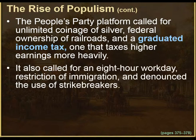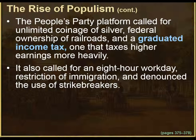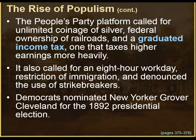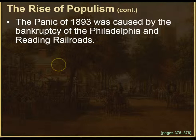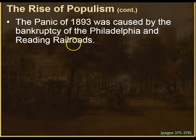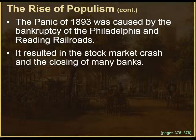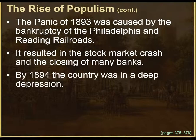The platform also called for an eight-hour workday, restriction of immigration, and denounced the use of strike breakers. Democrats nominated New Yorker Grover Cleveland for the 1892 presidential election, and Cleveland won. In 1893, a panic was caused by the bankruptcy of the Philadelphia and Reading Railroads, resulting in a stock market crash and the closing of many banks. By 1894, the country was deep in a depression.